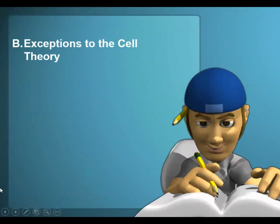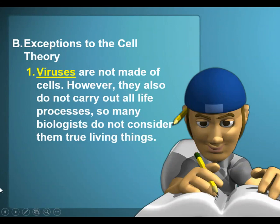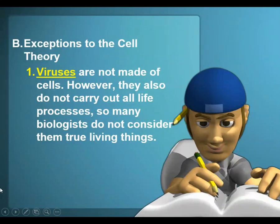Some exceptions to the cell theory: the first one is viruses, like the coronavirus. They're not made of cells — they're basically made of protein and DNA or RNA. They can replicate, but only inside another cell. They don't really consume nutrients, but they do have DNA, so they don't perfectly fit the characteristics of life. Scientists are still in discussion about whether to call viruses alive or not — it's definitely a debatable topic.